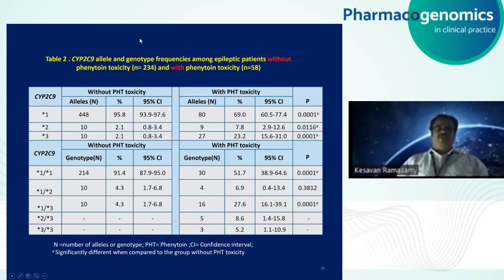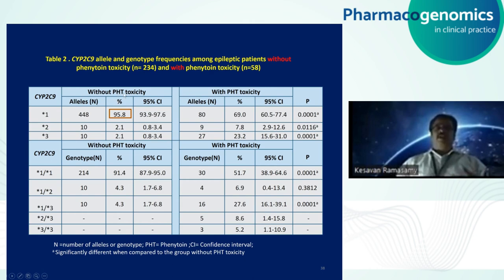Looking at allele frequency, 95.58% of those without phenytoin toxicity carried the star 1 / star 1 functional allele — they metabolized the drug effectively and were protected from developing phenytoin toxicity. On the other hand, the mutant allele percentage was higher in those with phenytoin toxicity compared to only 2.1% in controls. The higher prevalence of the mutant allele is responsible for making individuals susceptible to phenytoin toxicity.